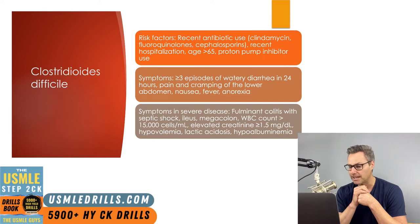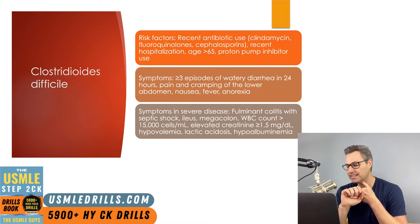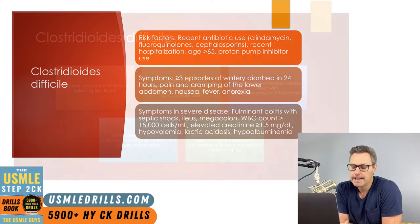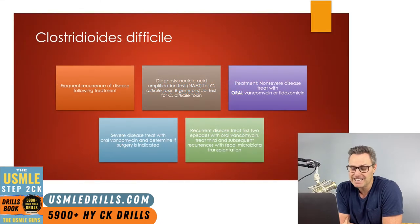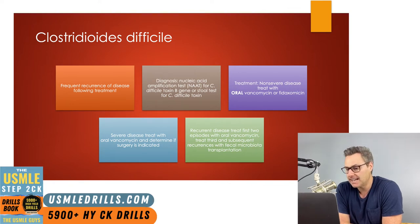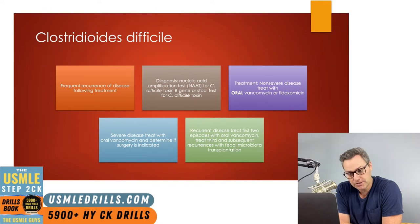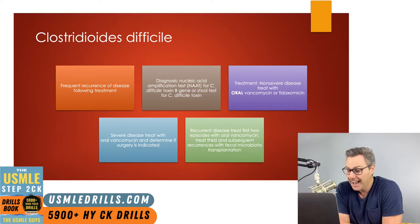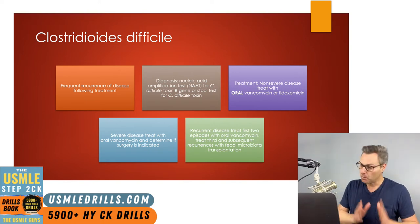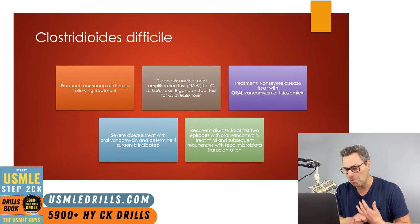In severe cases, patients can develop fulminant colitis with septic shock, ileus, megacolon, a white blood cell count over 15,000 cells per milliliter, elevated creatinine of 1.5 milligrams per deciliter or higher, hypovolemia, lactic acidosis, and hypoalbuminemia. Patients often have frequent recurrences even after treatment, and one recurring episode makes additional recurrences far more likely. Diagnosis can be made with a nucleic acid amplification test for C. difficile toxin B gene or a stool test for C. difficile toxin. Treatment for non-severe disease is oral vancomycin or fidaxomicin. For severe cases, we treat with oral vancomycin and determine if surgery is indicated. For recurrent disease, treat the first two episodes with oral vancomycin, then treat the third and any subsequent recurrences with fecal microbiota transplantation.